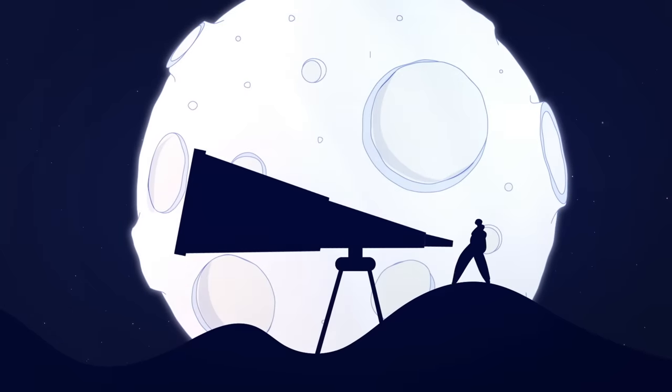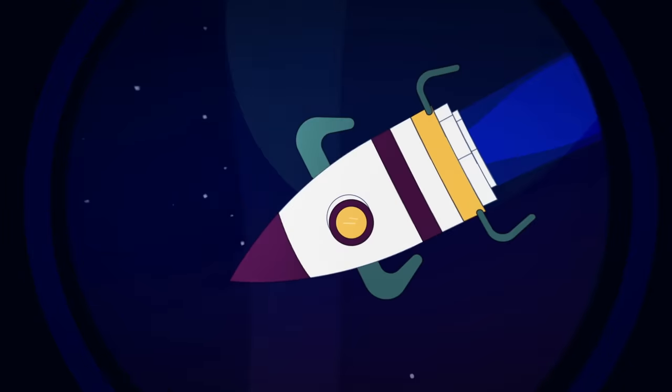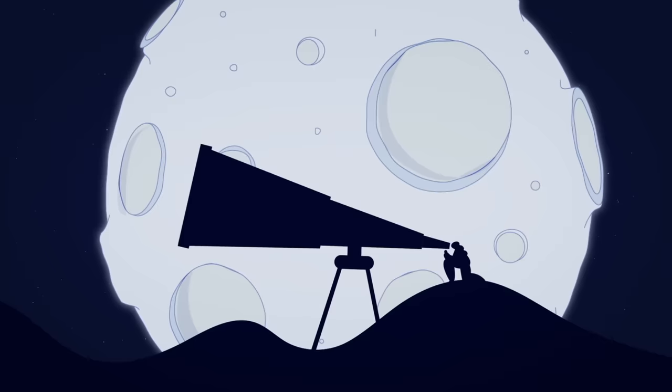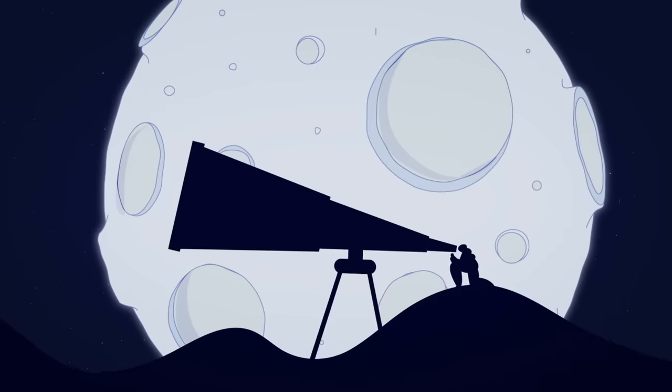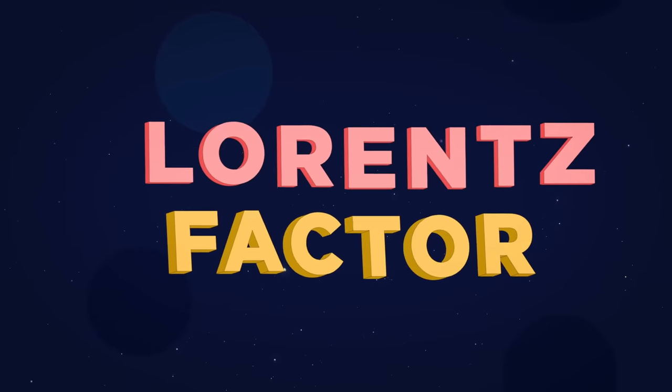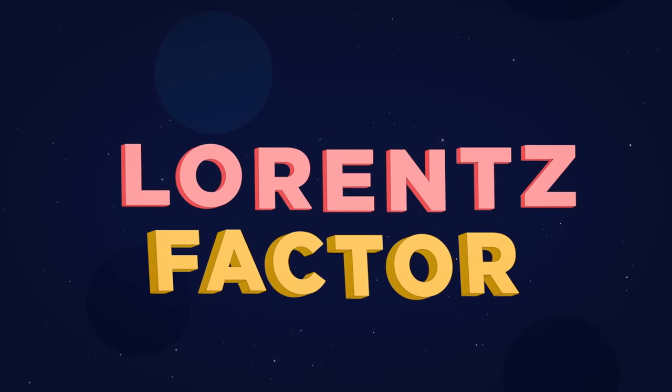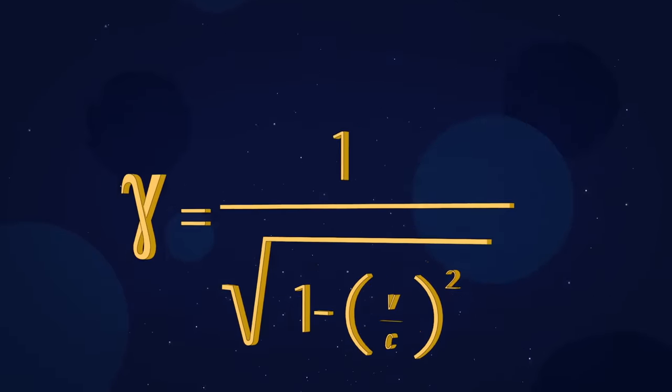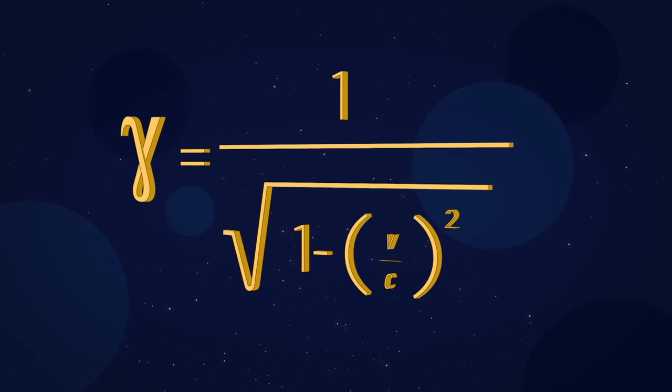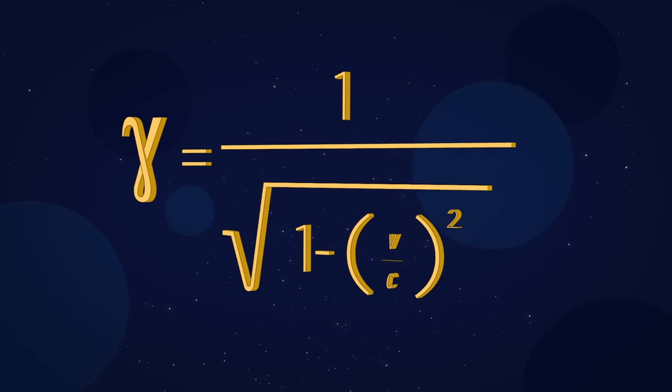First of all, the faster an object moves through space, the slower it moves through time, compared to an unmoving observer. This relationship can be quantified with something called the Lorentz factor, which is defined by this equation. And secondly, the length of a moving object as measured by an observer at rest will contract by the same factor.